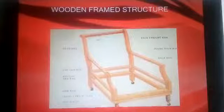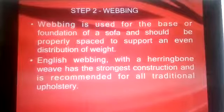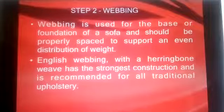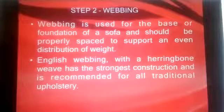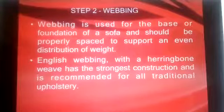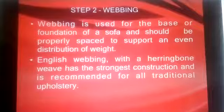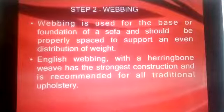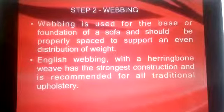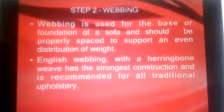Here is an image of a wooden frame structure — we are taking a sofa as today's example. The second step is webbing. Webbing is used for the base or foundation of a sofa and should be properly spaced to support an even distribution of the user's weight. English webbing with a herringbone weave has the strongest construction and is recommended for all traditional upholstery.